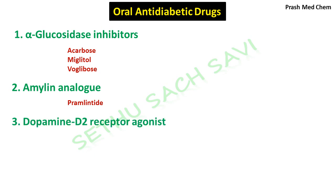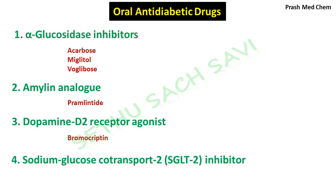The third class in the miscellaneous category is dopamine receptor agonists — specifically D2 receptor agonists — and the example is bromocriptine. The fourth class is sodium-glucose co-transporter 2 (SGLT2) inhibitors, and the drug is dapagliflozin. With that, we have reached the end of the classification of oral anti-diabetic drugs based on chemistry and pharmacology.